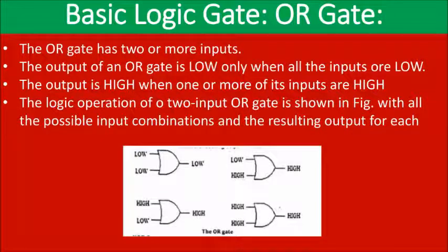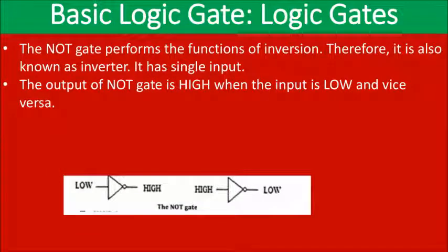The last basic gate is the NOT gate. The NOT gate performs the function of inversion, so it is also called an inverter. It has a single input and a single output. If the input is low then the output is high, and if the input is high then the output is low.